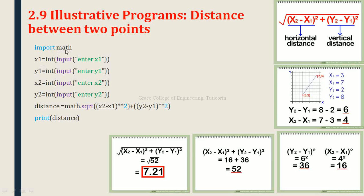For the Python program, we import the math module for mathematical functions. We take four integer inputs: x1, y1, x2, y2. The distance is calculated as: distance = math.sqrt((x2 - x1) ** 2 + (y2 - y1) ** 2), using the exponent operator (**) for squaring. Finally, we print the distance. This completes the program for distance between two points.